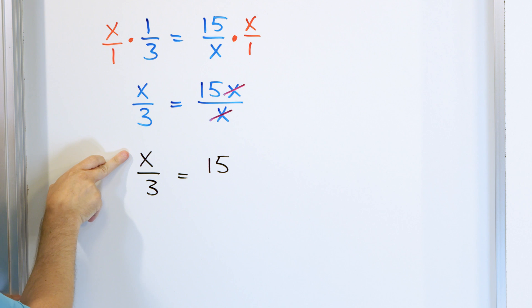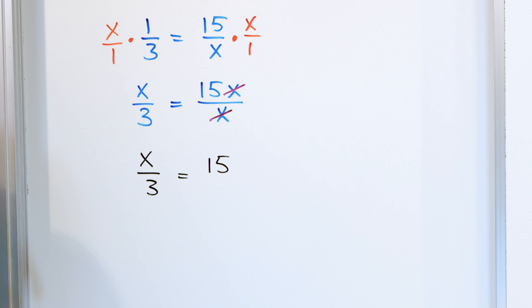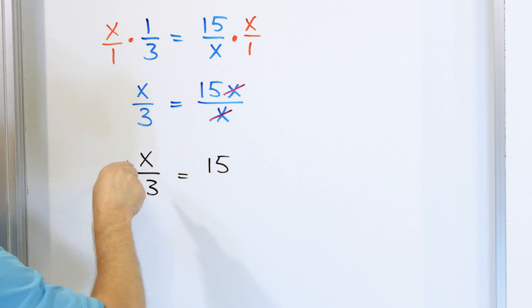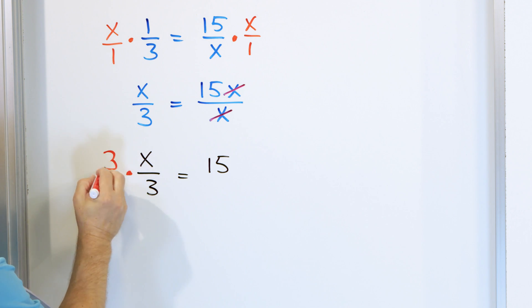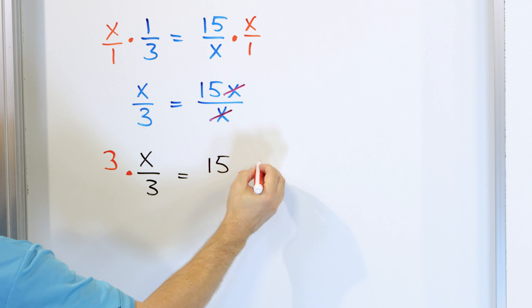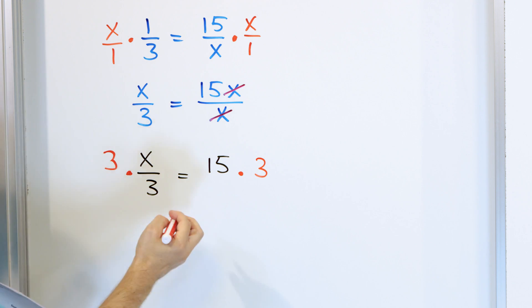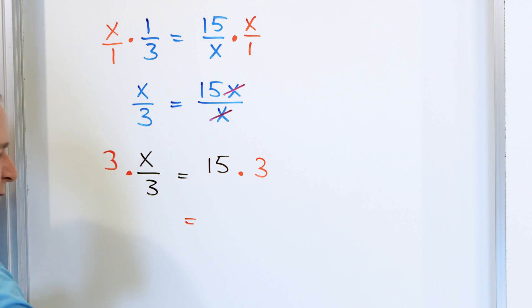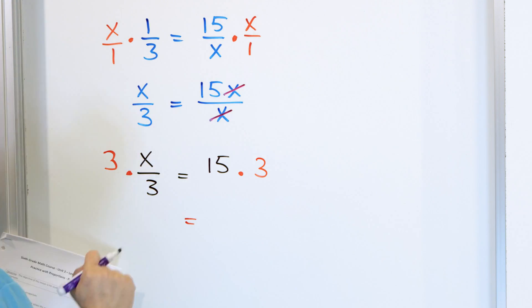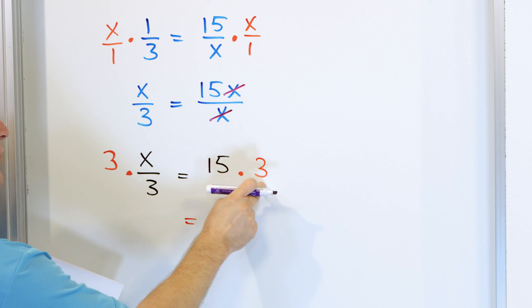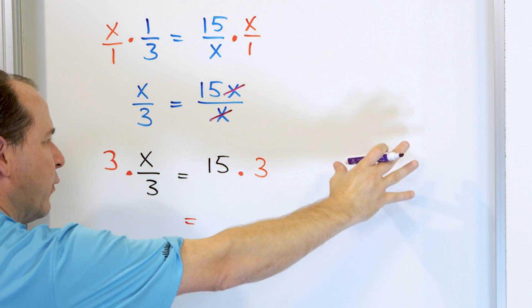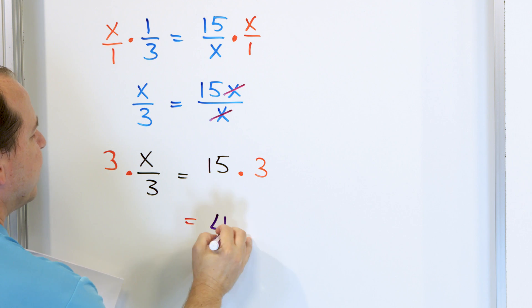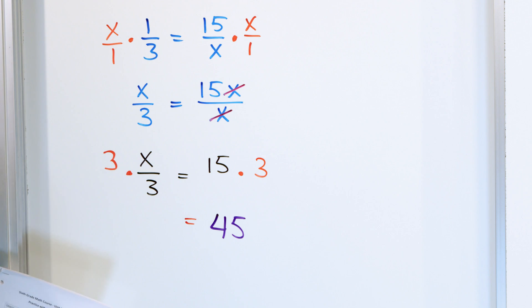Now we have x on the top but it's still divided by three. So we want to get x by itself — it's divided by three, so we do the opposite: multiply by three on the left, and multiply by three on the right. On the right, it's quite simple: 15 times three. 15 times two is 30, so 15 times three is 45.